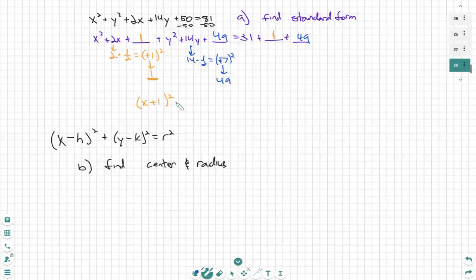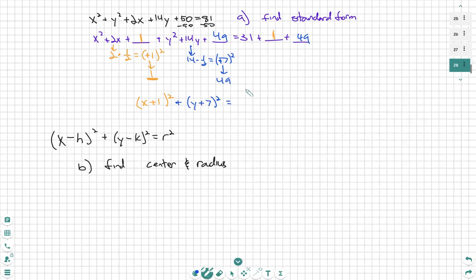I'm just going to plug an x right inside of there. So it's going to be x plus one squared plus, and then right inside of there, y plus seven squared. And then I'm just going to add the right side, 31 plus one plus 49, which is 81.